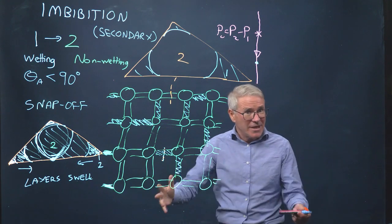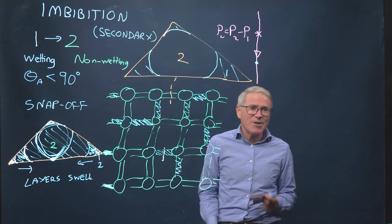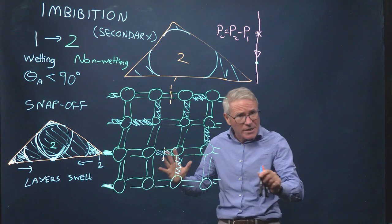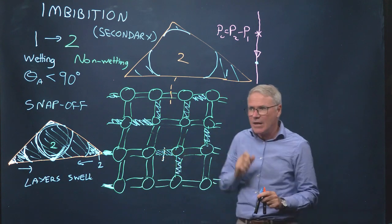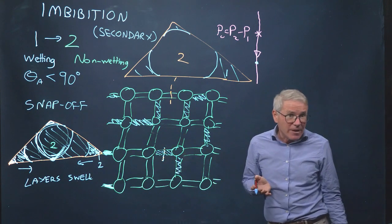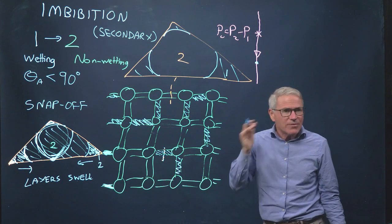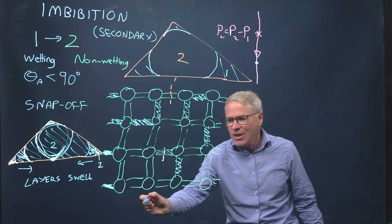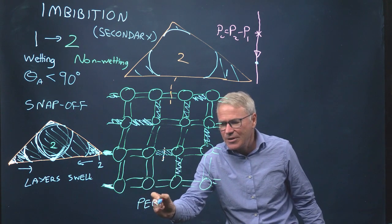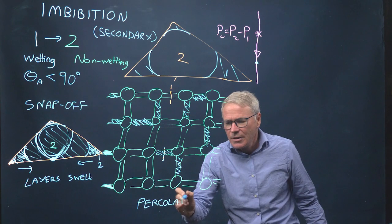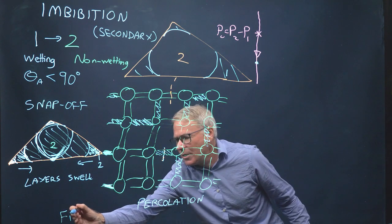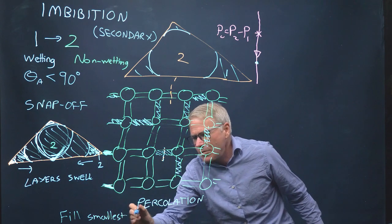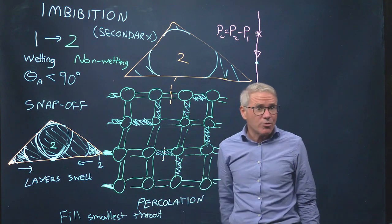Why do we fill the smallest ones first? Because the wetting phase likes the surface — it wants to be in the little regions — and the non-wetting phase wants to be in the big regions. So this is a random filling process, in order of size, and just as we had invasion percolation, this is also a percolation process. You fill the smallest throats first, then the next smallest, then the next smallest.